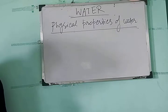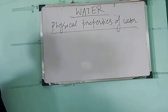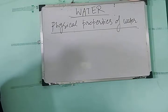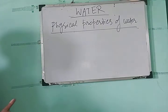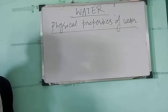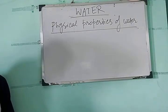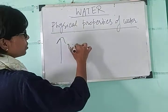Water boils at a temperature lower than 100 degree Celsius at a hill station. Suppose you are going to a hill station — their water boils quickly, that is at lower than 100 degree Celsius. Why? Because hill stations are at higher altitude, and at higher altitude atmospheric pressure decreases.